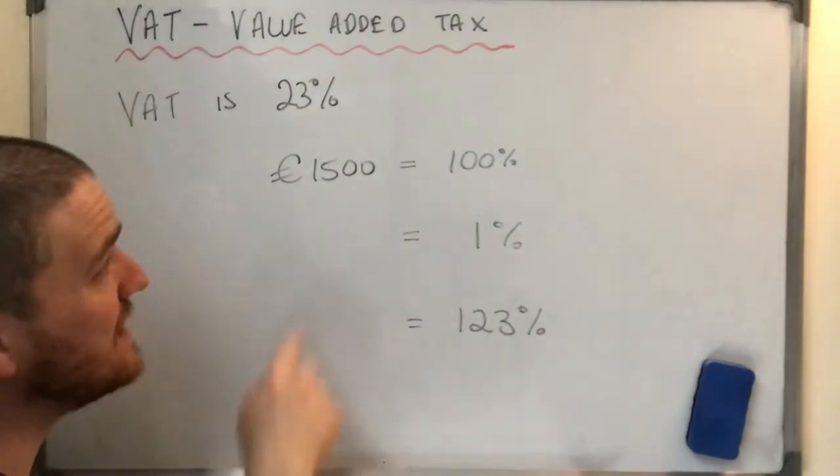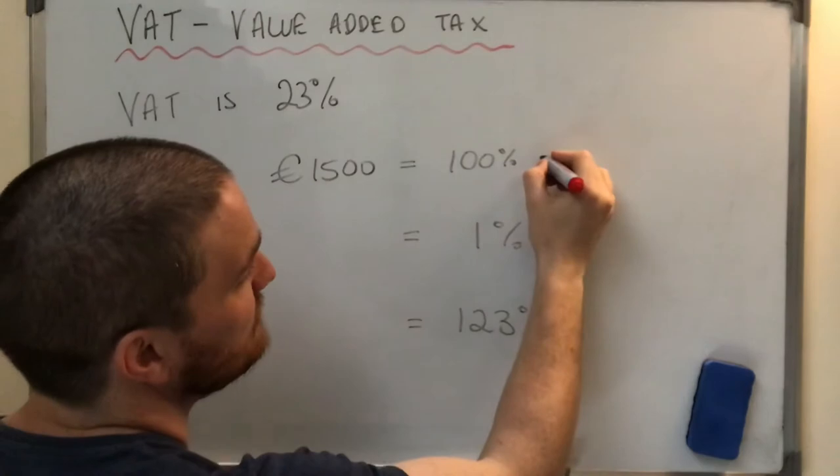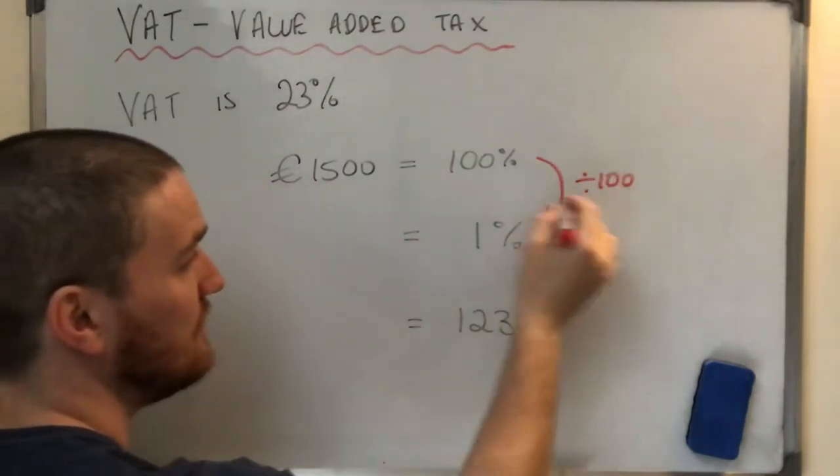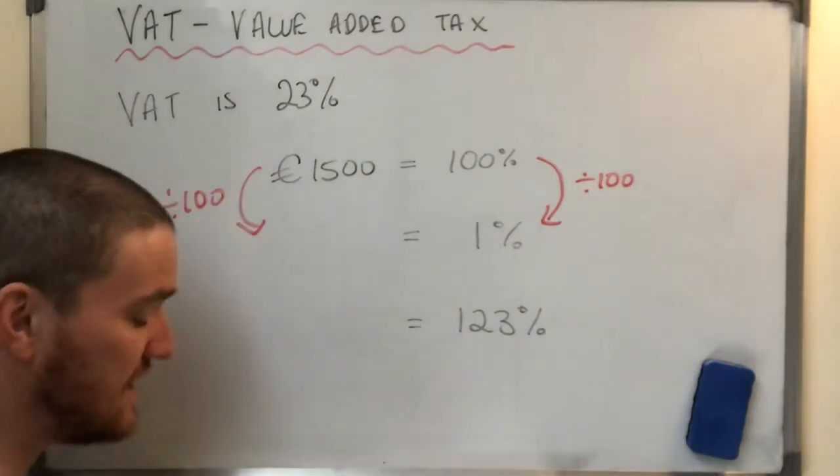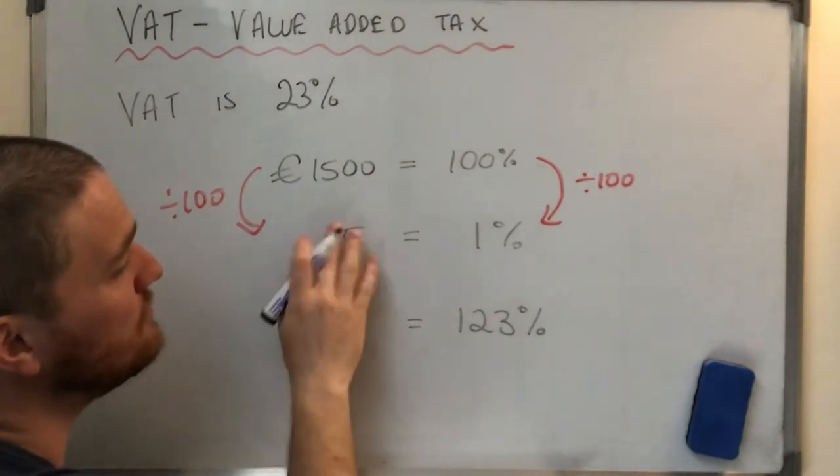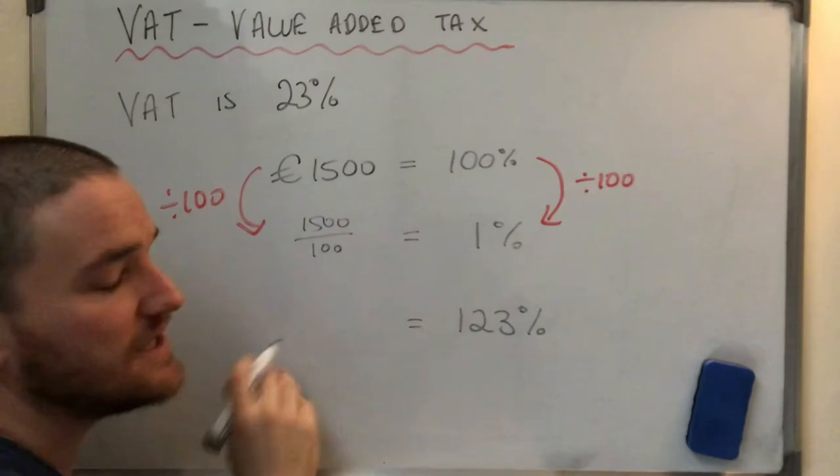Okay. So the band cost €1,500. Okay. Before VAT. So we're going to say that €1,500 is the 100%. And we want to get up, we want to add 23%. So we're going to get to 123%. But always we're going to find 1% and then we're going to find 123. So you can see the steps the same. It doesn't matter what the number is. So on the right, to get from 100 to 1, I divide by 100. If I do it on the right, I have to do it on the left.